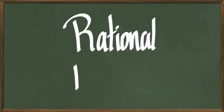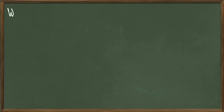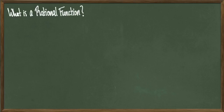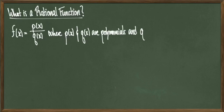Hey everyone, today we're going to be talking about rational functions. So first let's talk about what a rational function is. A rational function f has the form p over q, where p and q are polynomials and q is not equal to 0 itself.